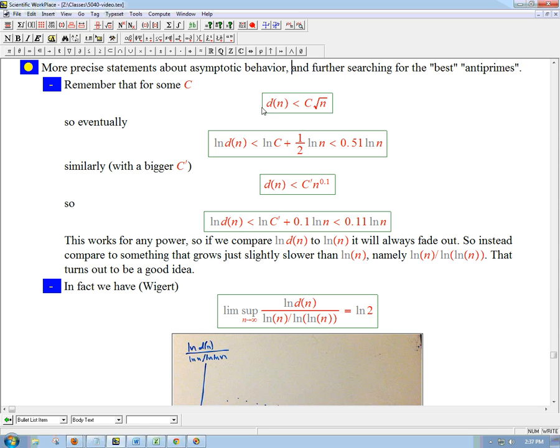So the key is more precise statements about asymptotic behavior, the long-run behavior of d(n) and sigma(n). So here's one way of saying this result: d(n) grows slower than powers. So for example, it goes slower than the one-half power. So there's some constant C, maybe it has to be rather large, so that d(n) < C√n. So eventually, or in other words, for big n, we don't really care about small n too much. We just take the log of both sides. So ln(d(n)) is ln(C) plus one-half times ln(n).